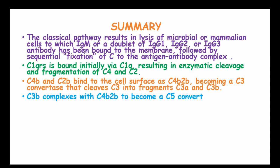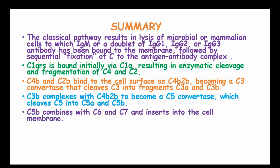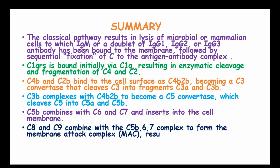C3B complexes with C4B and C2B to become a C5 convertase, which cleaves C5 into C5A and C5B. Then C5B combines with C6 and C7 and inserts into the cell membrane. C8 and C9 combine with C5B, C6, and C7 complexes to form the membrane attack complex, resulting in increased permeability, changes in osmotic pressure, and cell lysis.